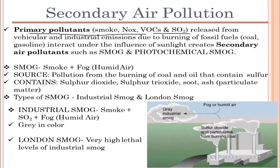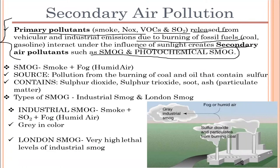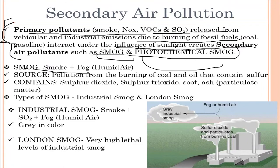Primary pollutants such as smoke, VOCs (volatile organic compounds), and sulfur dioxide released from vehicular and industrial emissions, under the influence of sunlight, create secondary air pollutants such as smog and photochemical smog. Primary pollutants — sulfur dioxide, nitrogen dioxide, and carbon monoxide — released from various industrial and vehicular emissions, under the influence of sunlight, lead to the formation of secondary pollutants like smog and photochemical smoke.